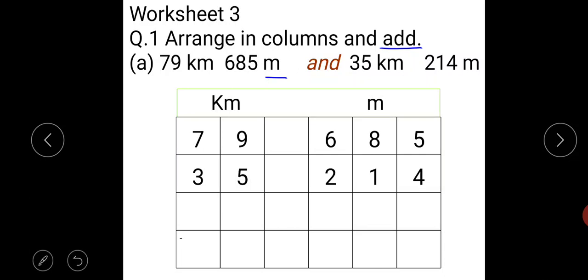So first of all we write these numbers in columns. We write kilometre in kilometre column and metre in metre column. So first is 79 kilometre then 685 metre. So leave one box between kilometre and metre in your notebook.